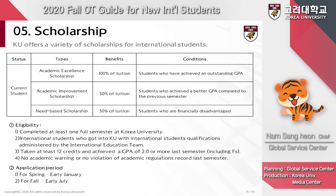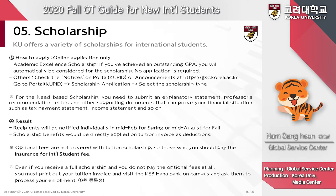There are different types of scholarships offered to Korea University's international students. Among them are the Academic Excellence Scholarship, Academic Improvement Scholarship, and Need-Based Scholarship. The list of eligibility requirements is shown on this slide. The application period for fall semester is in early July, and for spring semester it is in early January. Please be on the lookout for scholarship notices on the portal around these times. For the Academic Excellence Scholarship, if you achieve an outstanding GPA, you will automatically be considered — no application is needed.